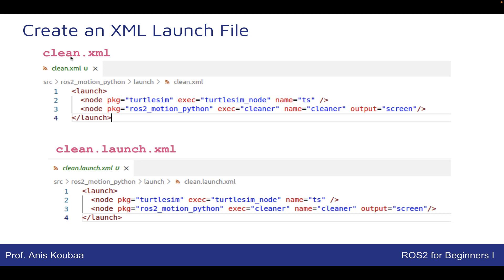Pay attention to the naming of the launch file. The name can be just clean.xml, or clean.yaml, or clean.py. A better convention is to write clean.launch.xml — this way we know in advance that this is a launch file, not a more general XML file. I really prefer to always use the prefix launch before .xml or .yaml or .py in order to have a better understanding. In the setup.py, we need to include both formats. This is how we create an XML launch file in ROS2.